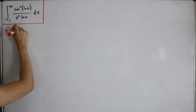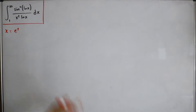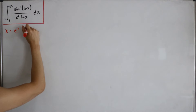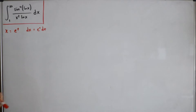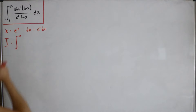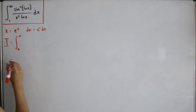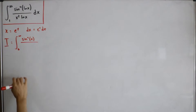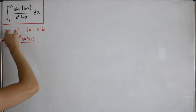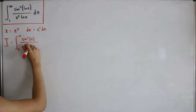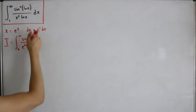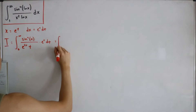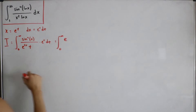Let x = eᵗ so that ln(x) = t, simplifying the natural log. Differentiating both sides gives dx = eᵗ dt. Changing the bounds: when x = 1, t = 0; when x = ∞, t = ∞. Substituting everything in, x² becomes e^(2t), and ln(x) becomes t. The e^t from dx and e^(2t) in the denominator combine, reducing to e^(-t).